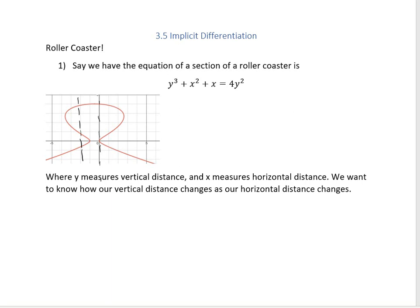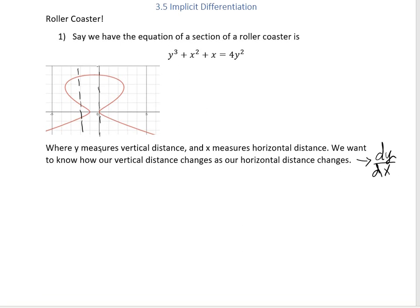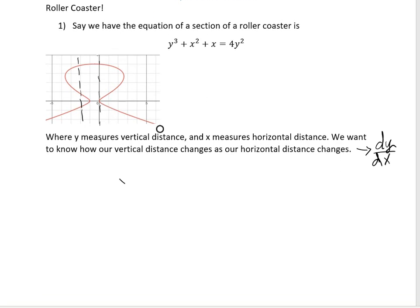In this relationship, y measures our vertical distance — where we are up and down — and x measures our horizontal distance, so how far left or right we are. What we want to know is how our vertical distance changes as our horizontal distance changes, which means we want to find dy/dx.